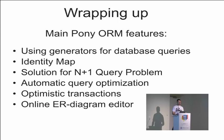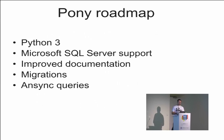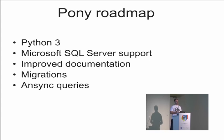Those are the main features covered today: generators and lambdas for database queries, identity map, a solution for the N+1 query problem, automatic query optimization, optimistic transactions, and an entity-relationship diagram editor. Here is the roadmap for Pony ORM development. We are currently working on Python 3 support as the most often requested feature. Then we are adding Microsoft SQL Server support — at this moment we support SQLite, MySQL, Postgres, and Oracle. After that we will add migrations and asynchronous query support.